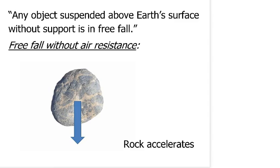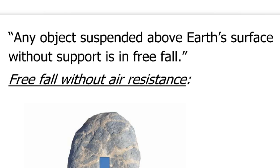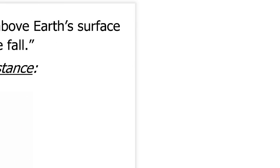So here we've got a more formal definition here. Any object suspended above Earth's surface without support is in freefall, so it's going to accelerate downwards. The acceleration due to gravity is always the same, and in fact we have a special value for it. It's been calculated by scientists to be, they call it little g, and it's about 10 meters per second squared.